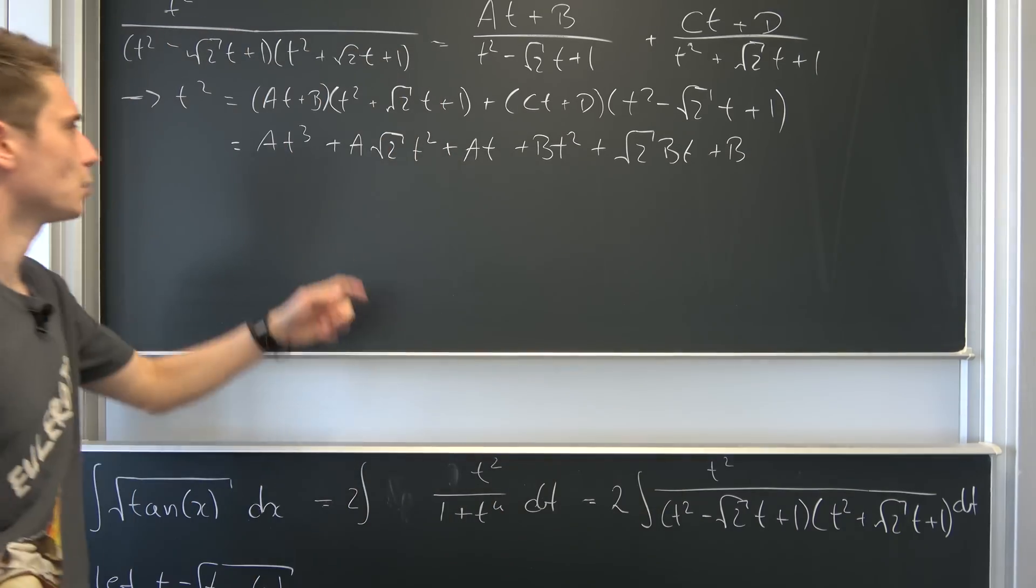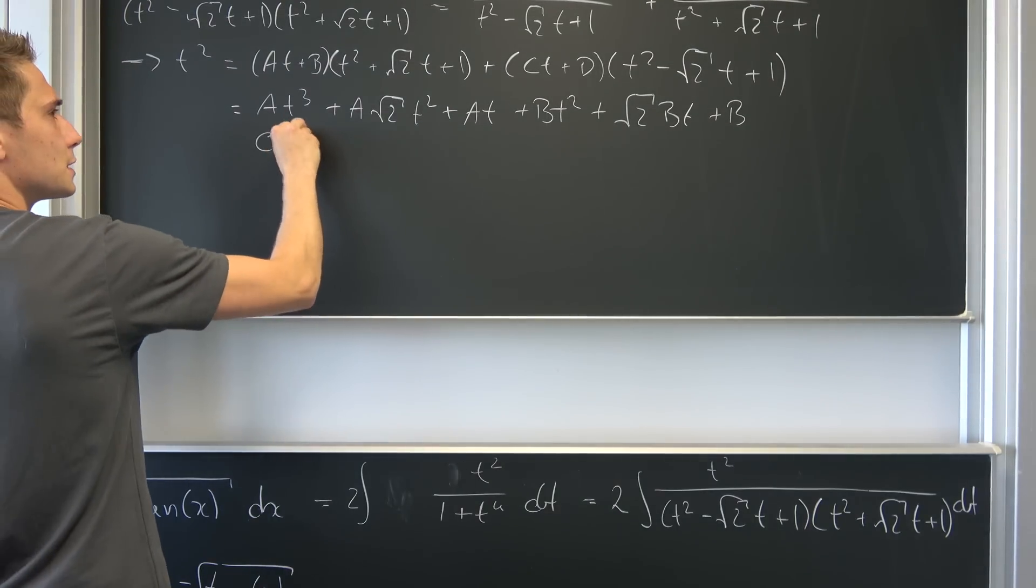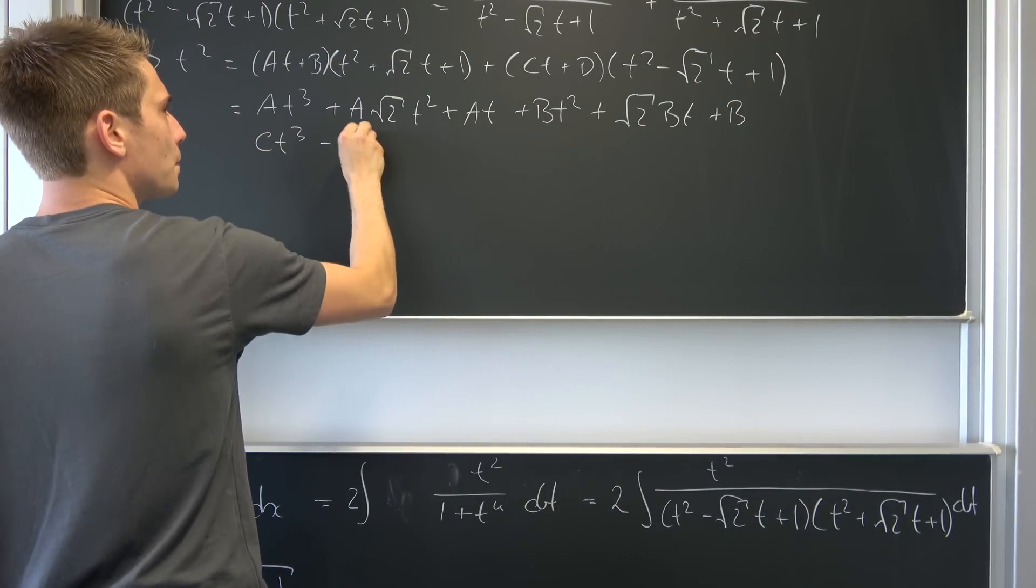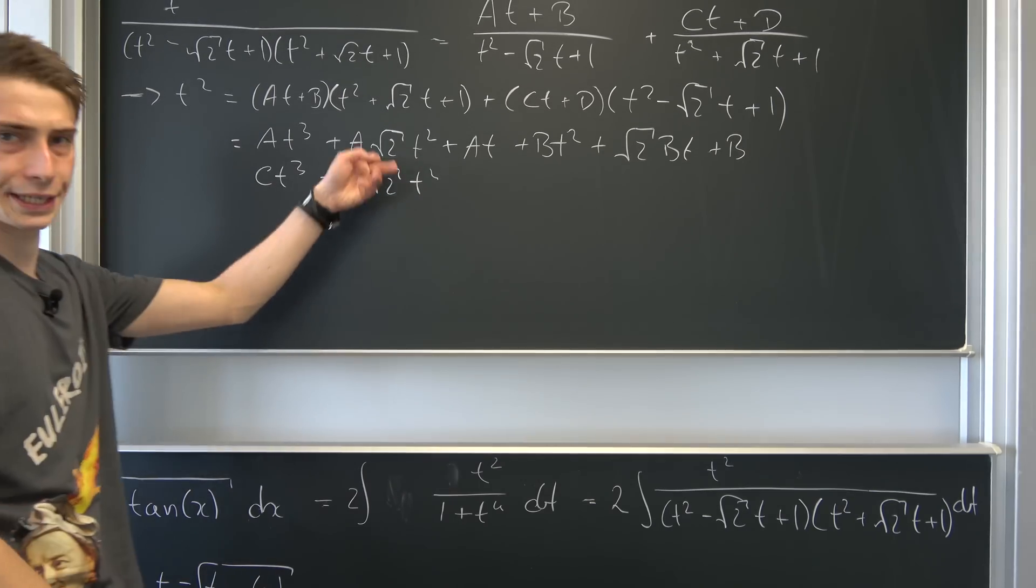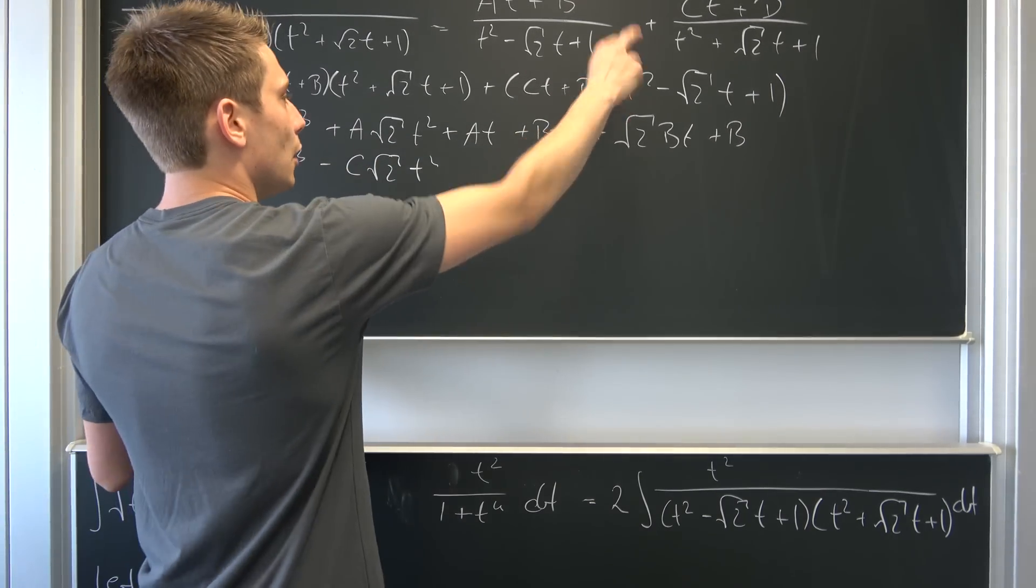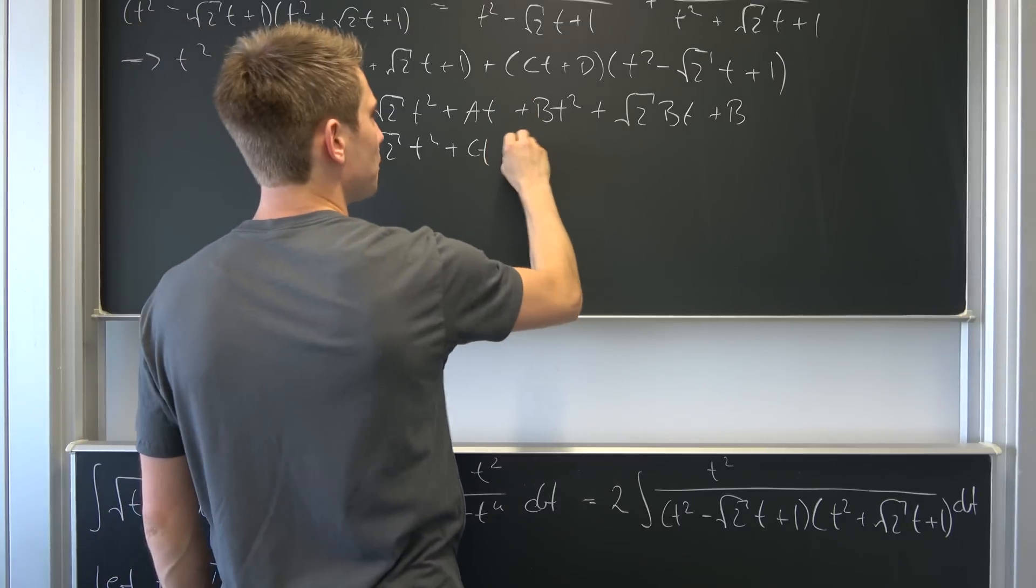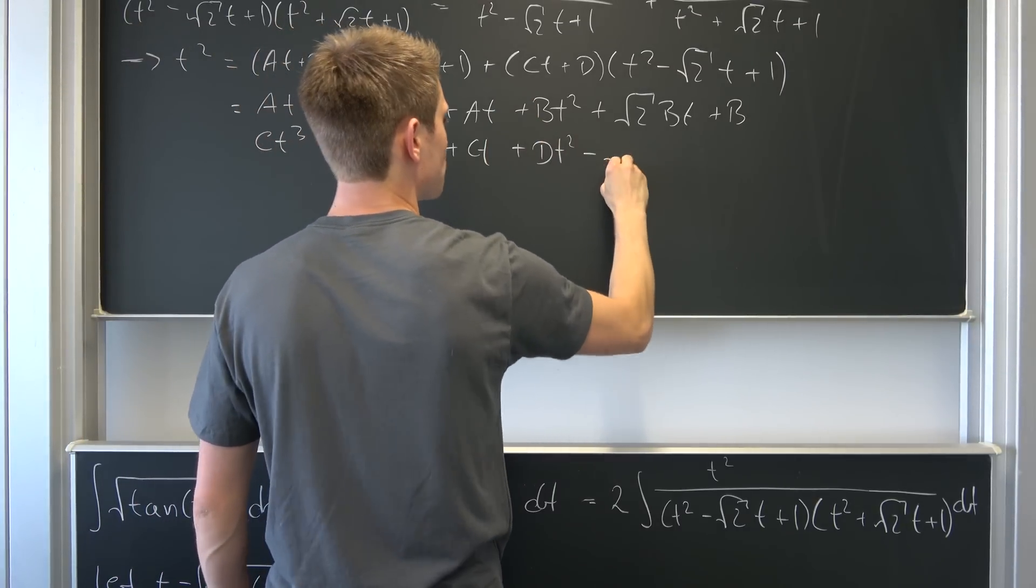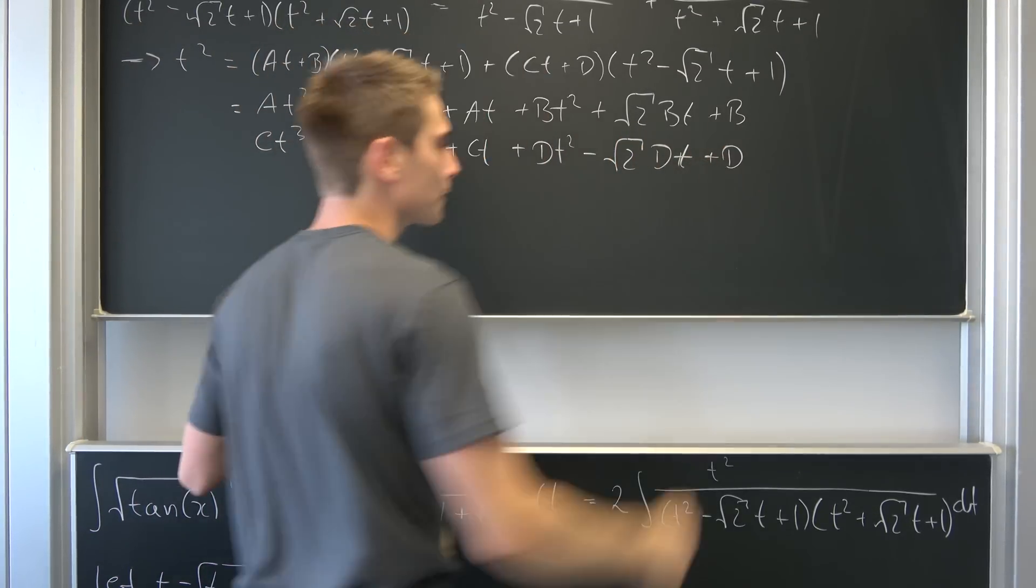So those were the first ones and now we are going to continue with factoring this out. So we have c t to the third power negative c square root of 2 times t squared. I hope you can see why I'm writing it this way so that you can see better what is going to cancel out in the end. Okay, next one. And then plus c times t. So for the next one plus d t squared negative square root of 2 d times t plus d.